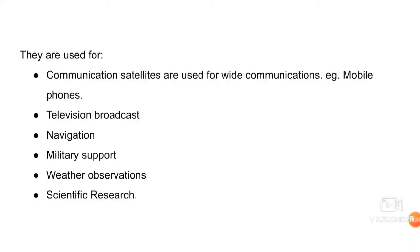Number one is communication. Satellites are used for wide communication, for example mobile phones, telephones, televisions, and broadcasts. All the channels you watch — cartoon channels, discovery channels, movie channels, song channels — each one has its own dedicated satellite. Television satellites are used for broadcast. They are also used for navigation, military support, weather observation and weather forecasting, and scientific research.